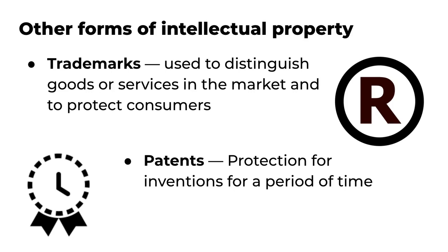Examples of trademarks are McDonald's Golden Arches and Geico's Talking Gecko. Another type of intellectual property is patents. A patent is an exclusive right granted to an inventor allowing the inventor to prevent others from making, selling, or using their invention for a period of time.